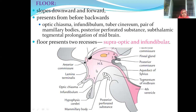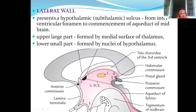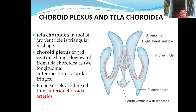The lateral wall is nothing but the two thalami. Between the two thalami we have the interventricular region. The choroid plexus is found everywhere — whether in the lateral ventricle, third ventricle, or fourth ventricle — we have the tela choroidea present, in which you will see the choroid plexus.